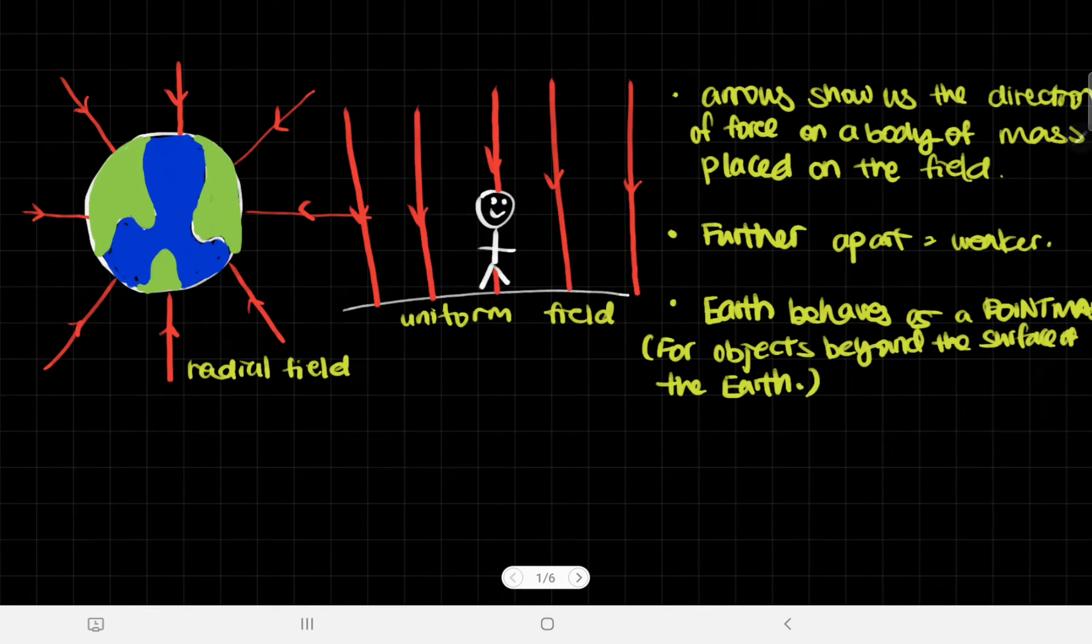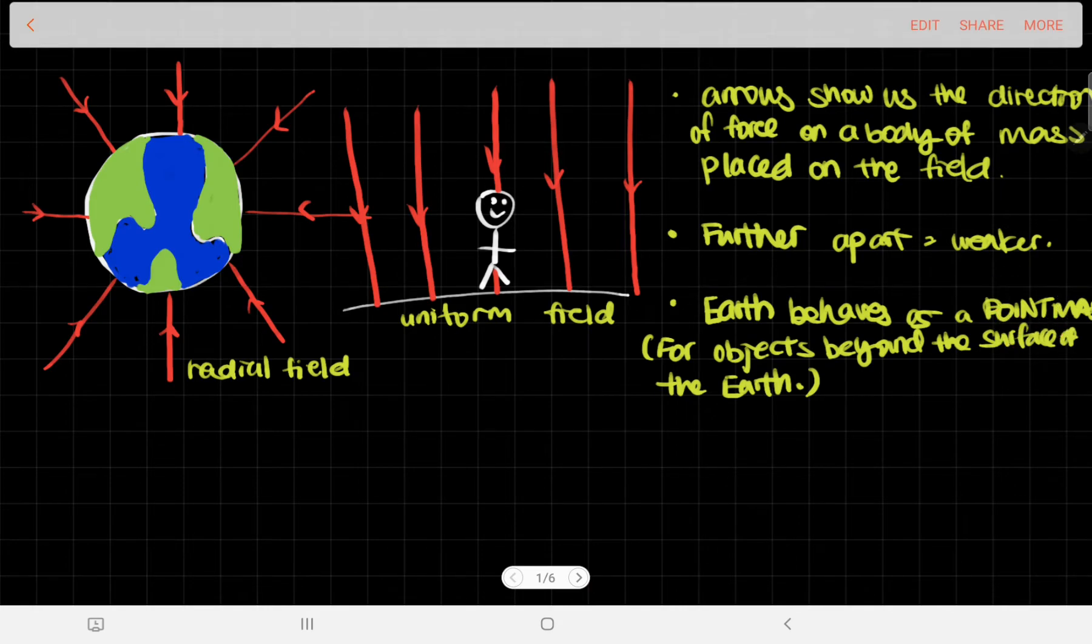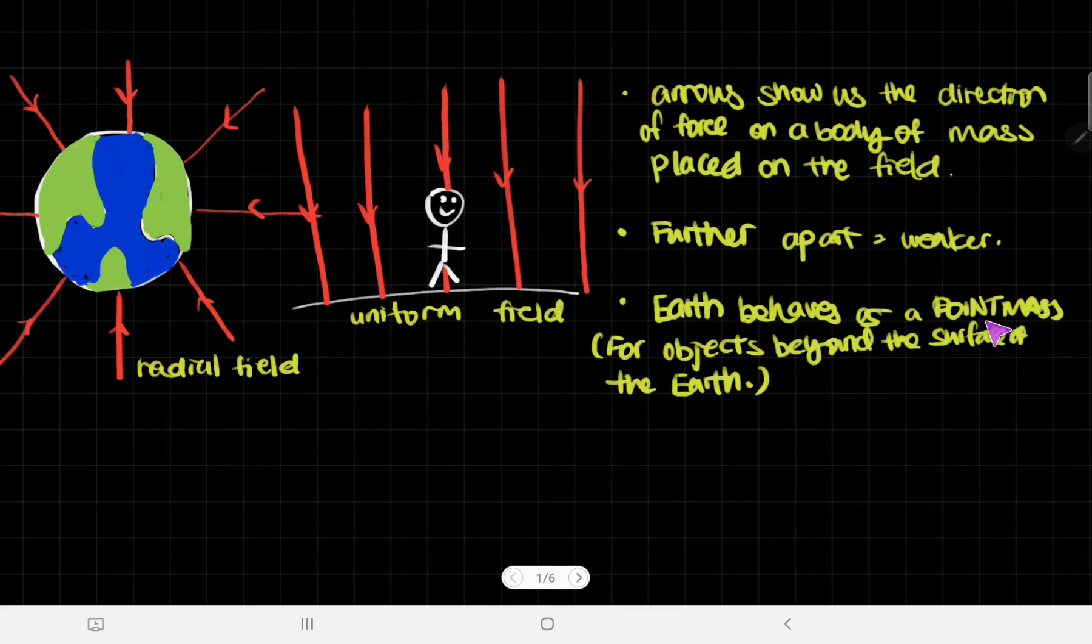Earth also behaves as a point mass. What that means is that the mass is basically all concentrated as a point. If we have Earth like this, this might not be true for things that are on the surface of Earth. But when we're talking about, this is the moon, and we're talking about the force that they're exerting on each other, we have to treat like how gravity works, we will always put Earth and the moon as well as a point mass.